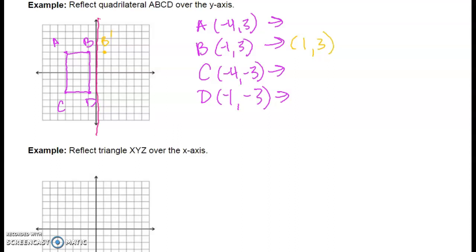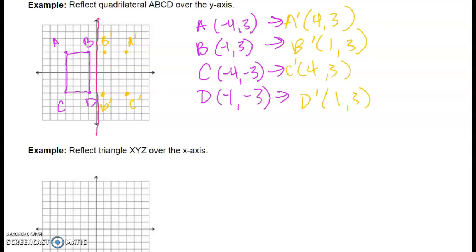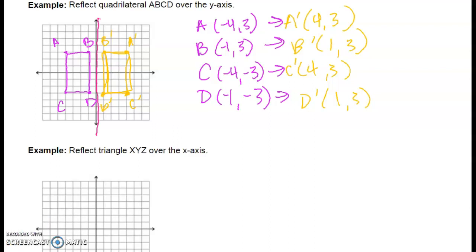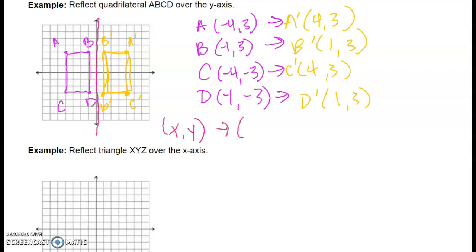A started out 4 units away from the line of reflection, so A prime is going to be 4 units away. A prime is going to be at (4, 3). D is one unit away from the line of reflection, so D prime is also going to be one unit away — D prime is at (1, 3). And C is four units away, so C prime is also going to be four units away. Now that I have both figures, I see that their size and shape is the same, and they're both the same distance away from the line of reflection. My rule for reflecting over the y-axis said that (x, y) becomes (-x, y), and we can see that's exactly what happened: all of my x values ended up switching signs, and my y values stayed the same.